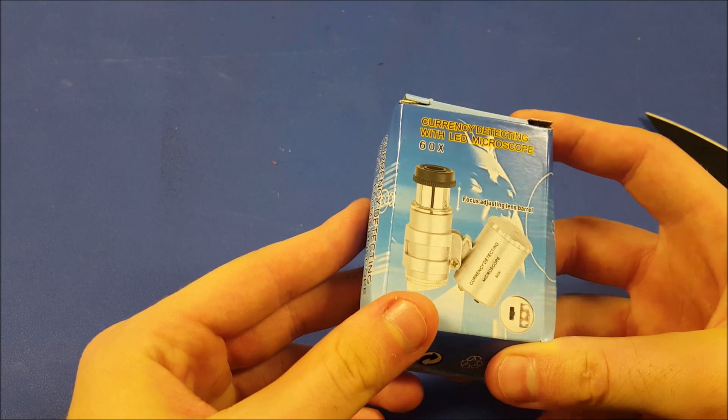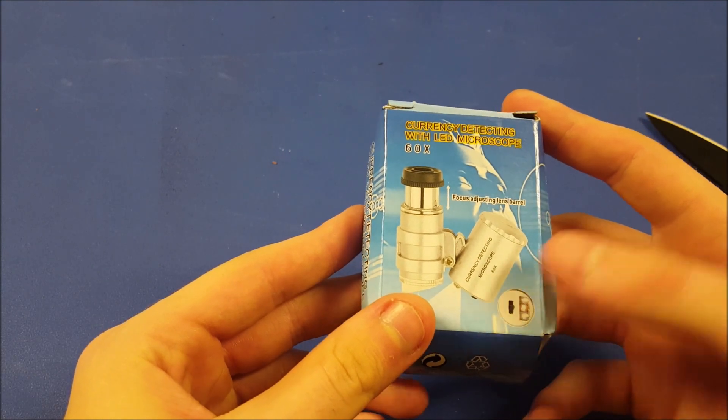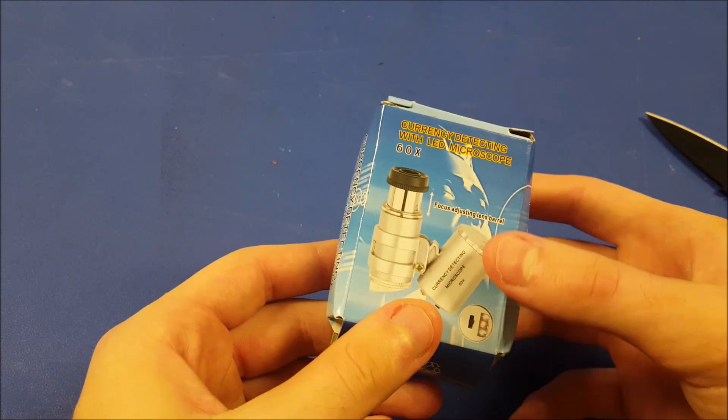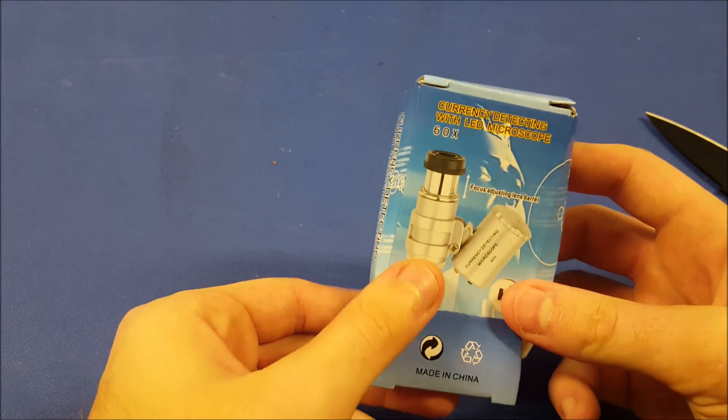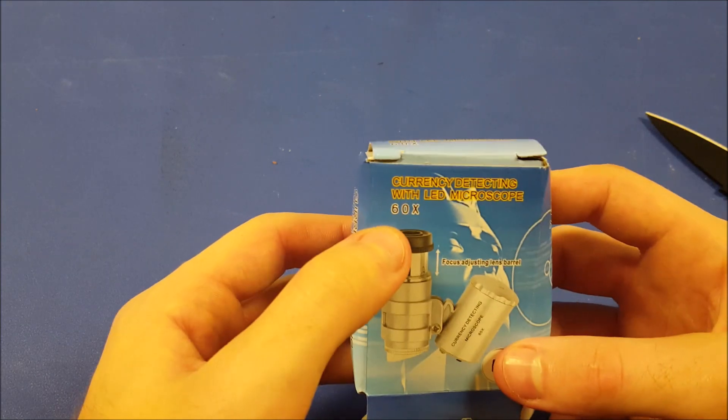What this is, is a currency detecting with LED. It's kind of like a microscope, kind of a macro lens kind of thing going on and you can use it to see small things. It says 60 times, that is fairly impressive. It had good reviews online so I've got high-ish hopes.